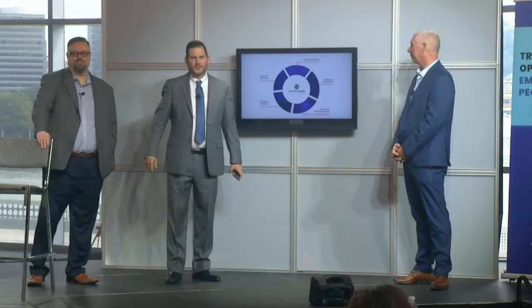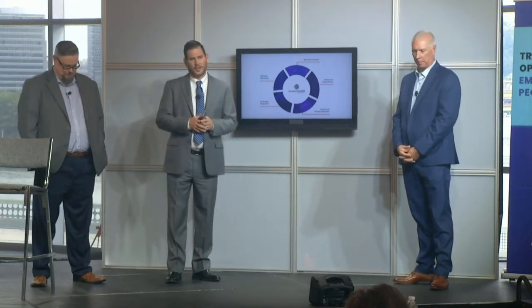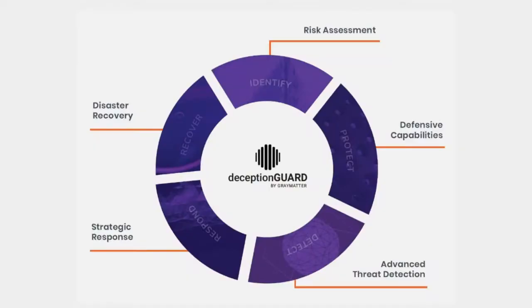Welcome back. We're going to round out today's topic with what we're calling the Wheel of Cyber, which is based off of the NIST standard. We've really gravitated towards that NIST standard. This is our own wheel: risk assessment within the Identify stage, defensive capabilities within the Protect stage, Detect for advanced threat detection, Respond with strategic response, and Disaster Recovery within the Recovery stage.